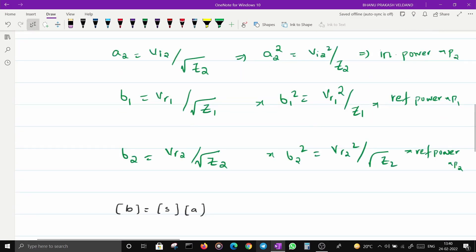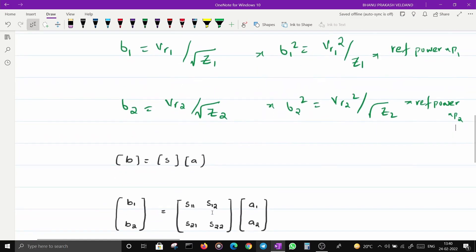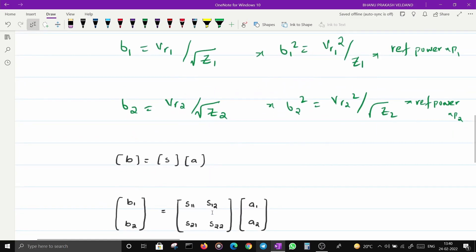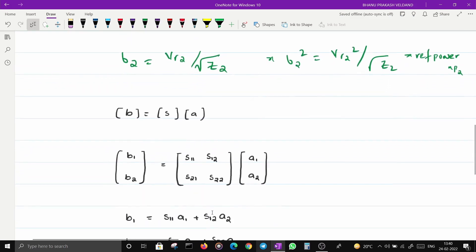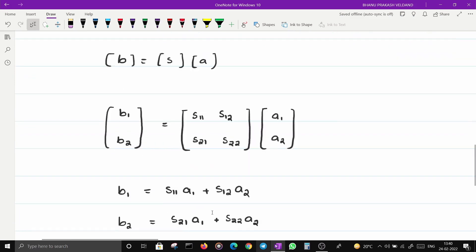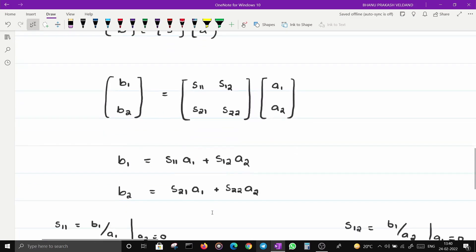B matrix is equal to product of S and A matrices. For a two-port network, that becomes: B1, B2 equals S11, S12, S21, S22 times A1, A2. If I expand it from this matrix notation, I can write this.